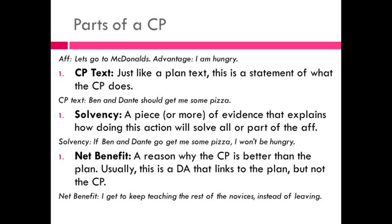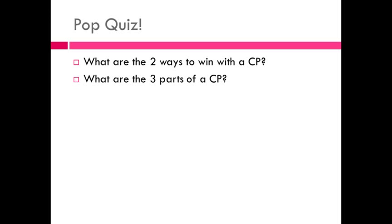For example, the net benefit would be: if I keep teaching the rest of the novices while Ben and Dante go get me pizza, then I can keep teaching instead of leaving. That's a reason why it's better for me to have someone else go get food right now rather than going myself. Pop quiz: what are the two ways to enter the counter plan, and what are the three parts? The answers: the two ways are proving it's mutually exclusive and proving it's net beneficial. The three parts are the counter plan text, solvency, and net benefit.